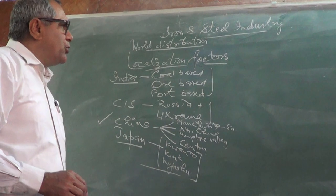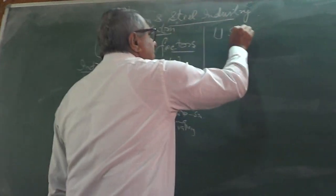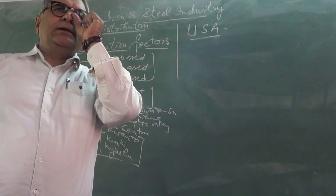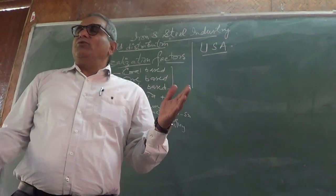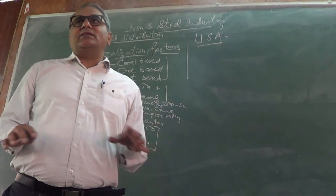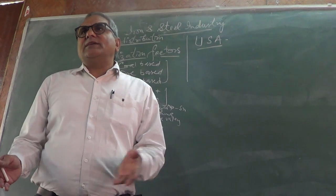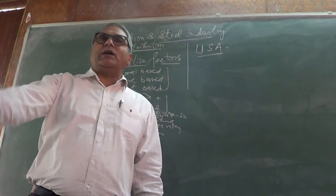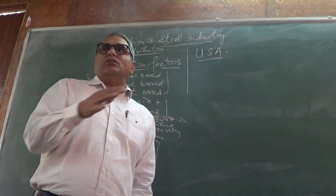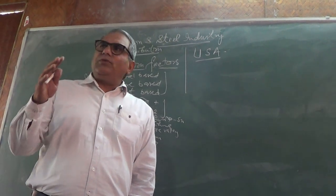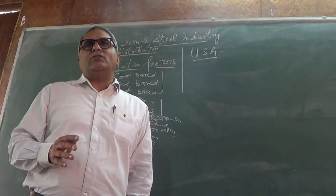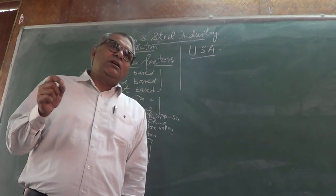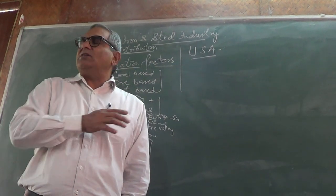Today let's discuss another important country — the USA. USA is a vast country with different types of geographical conditions, so this is a country of heterogeneity. There are young fold mountains, the Rockies, relict mountains — the Appalachians — prairie grasslands, coastal topography, Great Lakes, and perennial rivers. Climate ranges from tropical along the Gulf of Mexico to temperate in the northern region.